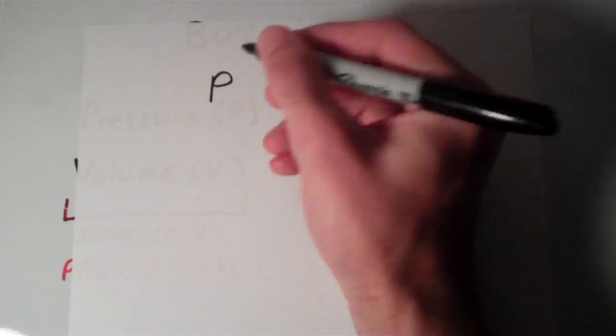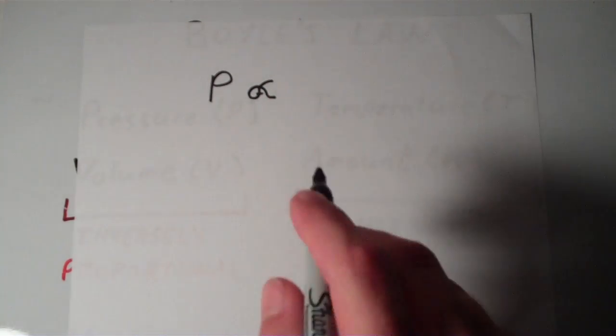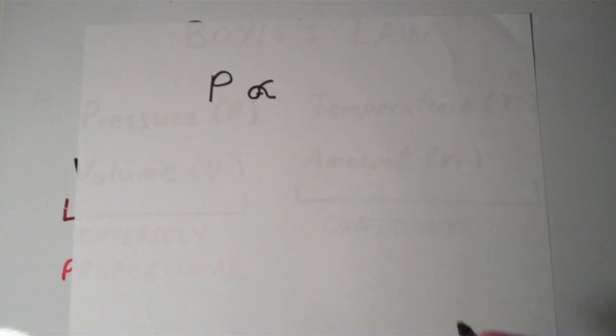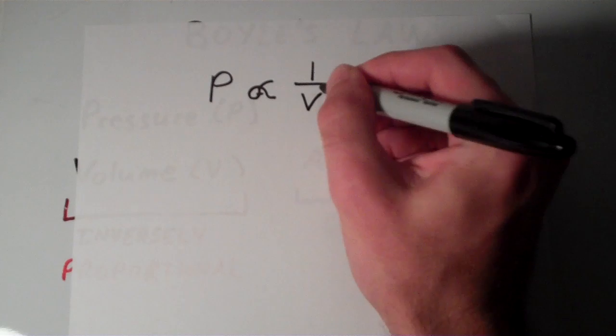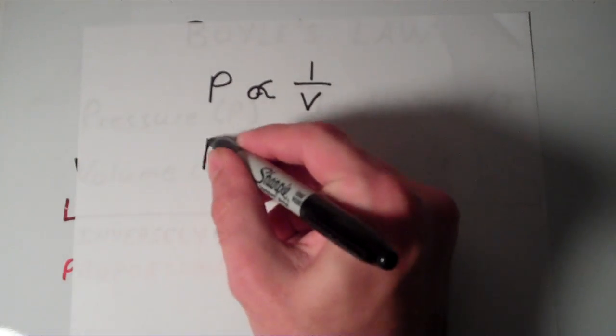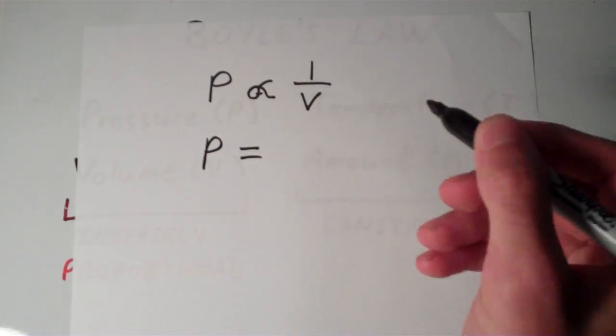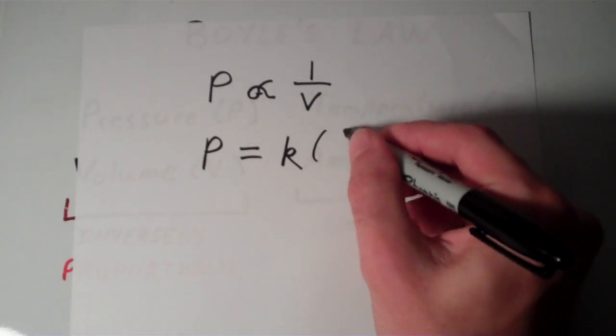So I'm going to write that in this way. I'm going to say that the pressure is proportional to the inverse of volume, so one over the volume. But I don't really like this proportional sign. I'd rather have a real equation. So the way that we get rid of this and turn this into an equal sign is to just say that the pressure P is equal to some constant of proportionality that we'll call k times one over V.